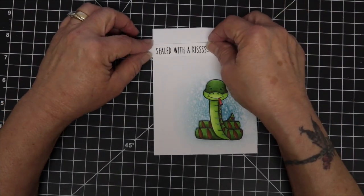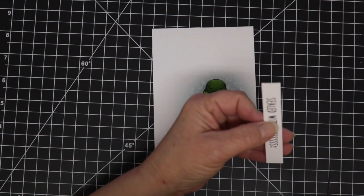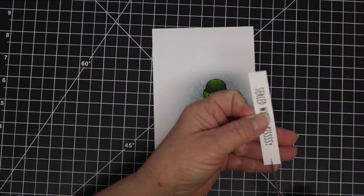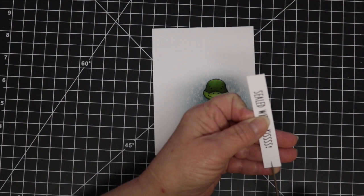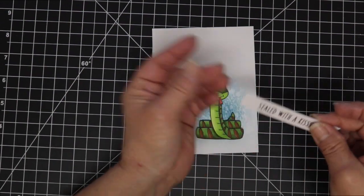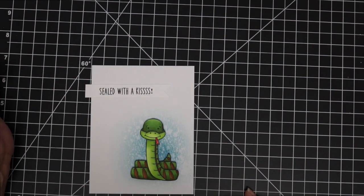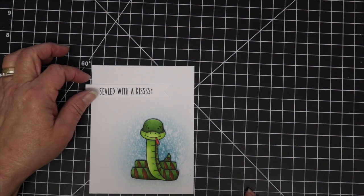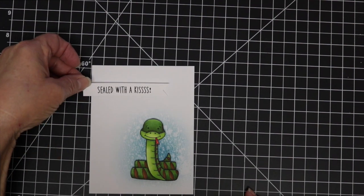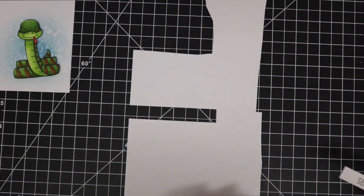So Jess also includes sentiments with her digital images. So I decided to use the sealed with a kiss for mine today. And I'm just going to fishtail that one end of it and then I decided I wanted that to be a different color. And I did not want to reprint it on color cardstock.